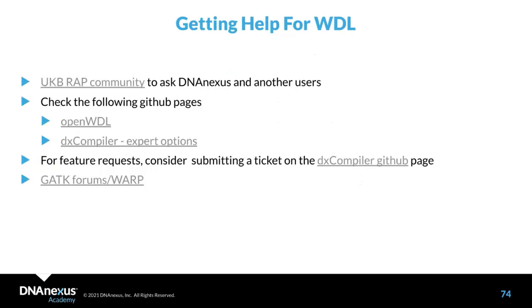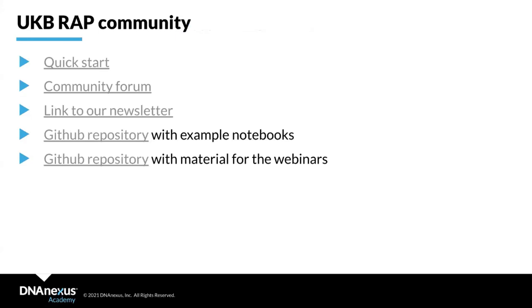Where to get help with WDL: visit the UKB RAP community to ask DNAnexus staff and other users questions. You can also check the OpenWDL GitHub page, DX compiler expert options on GitHub, or submit a feature request ticket to DX compiler. There is also a link showing how to do that. Additionally, you can look at GATK forums. For community resources, there is a quick start on our documentation and community forum, and you can join our newsletter. The code for our examples will also be posted to our GitHub repository before the next session.